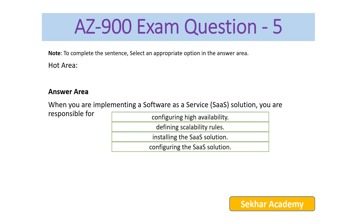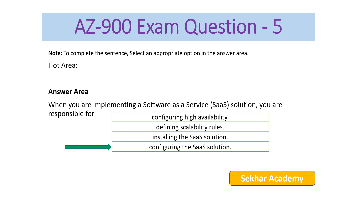AZ-900 exam question number five. To complete this sentence, select an appropriate option in the answer area. When you are implementing a software-as-a-service solution, you are responsible for — options are: configuring high availability, defining scaling rules, installing the SaaS solution, or configuring the SaaS solution. The correct answer is: configuring the SaaS solution.